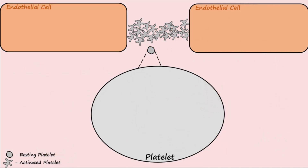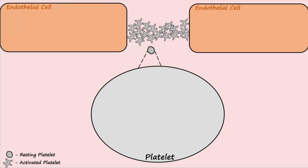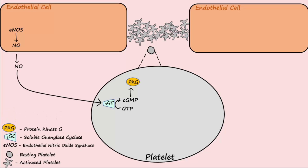The first approach used by endothelial cells to inhibit platelet activation is the production of nitric oxide, abbreviated NO, by the enzyme nitric oxide synthase. Secreted NO enters the platelets where it activates the enzyme guanylate cyclase, which then stimulates the formation of cyclic GMP from GTP. Cyclic GMP then activates protein kinase G, which blocks the function of phospholipase C.